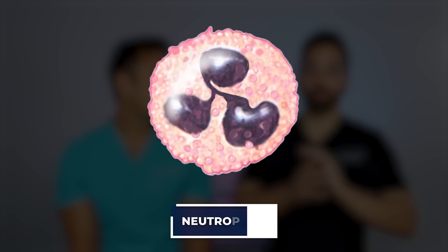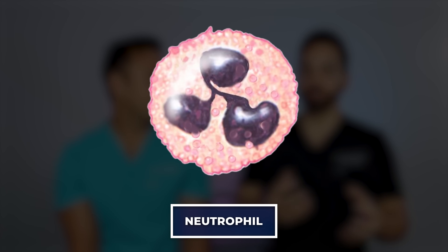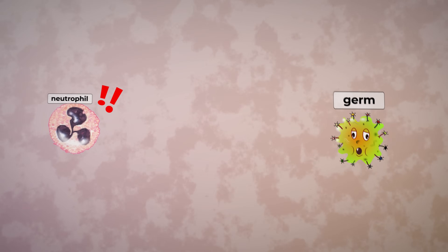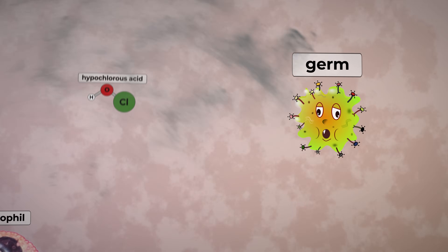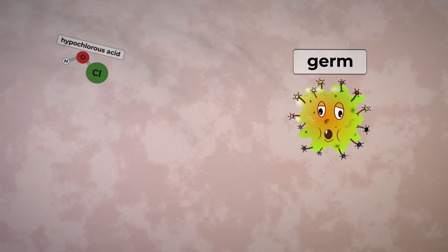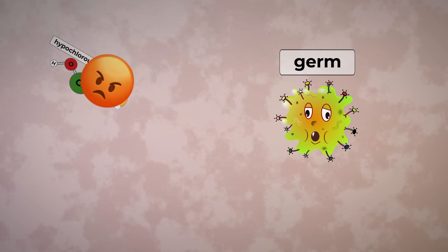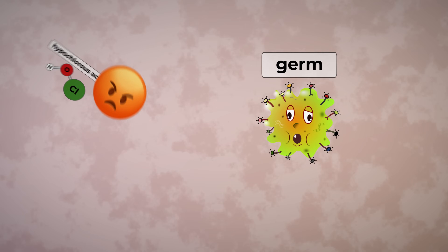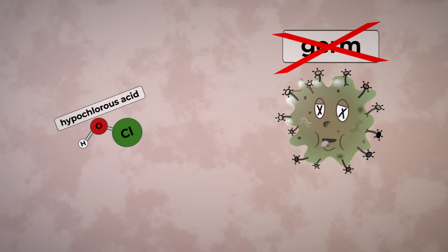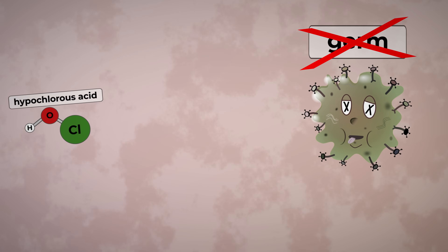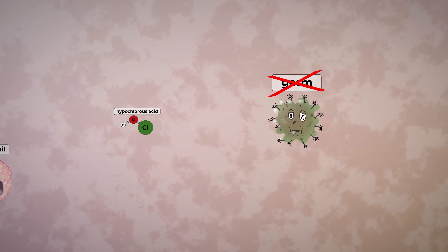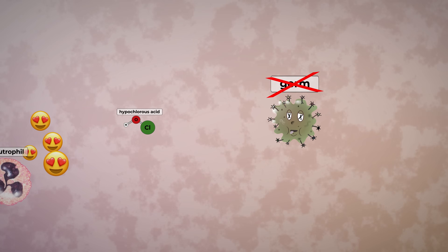So what is hypochlorous acid? It's an ingredient that's naturally produced by the skin. Your white blood cells, or neutrophils, create hypochlorous acid through an enzyme called myeloperoxidase. This hypochlorous acid actually kills viruses, bacteria, and funguses on our skin. Our skin is really good at protecting itself naturally, and hypochlorous acid plays an instrumental role in doing this.